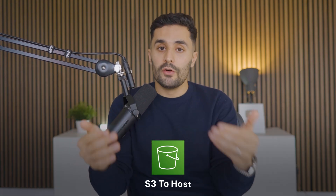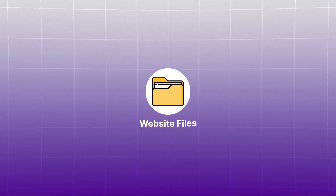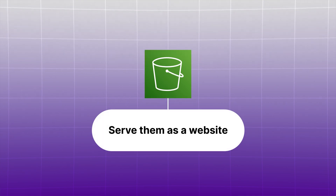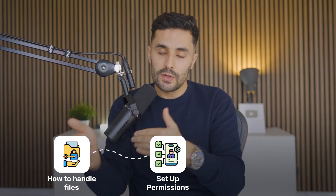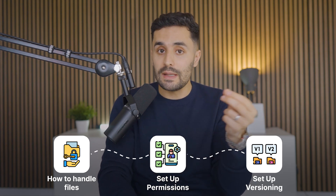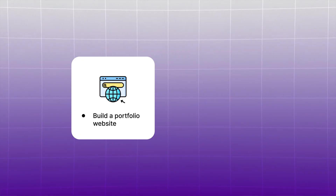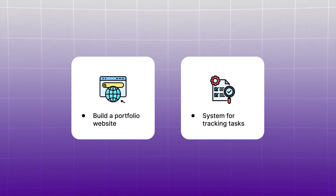Step four is building hands-on projects to get comfortable with AWS. First, build a portfolio website — a great starting project because you end up with something useful to show off your work. You'll use S3 to host it: create your HTML, CSS, and JavaScript files, put them in an S3 bucket, and tell S3 to serve them as a website. Along the way you'll learn to handle files in S3, set up permissions so people can view your site, and set up versioning.